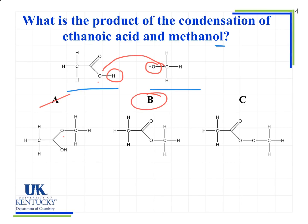Option C still shows two oxygen atoms, meaning H₂ rather than H₂O would be the other product. But in condensation we always produce H₂O. Additionally, option C shows a carbon-oxygen-oxygen-carbon arrangement rather than a carbon-oxygen-carbon bridge, and we would not see an oxygen-oxygen bond form in this type of molecule.